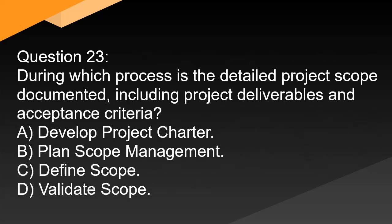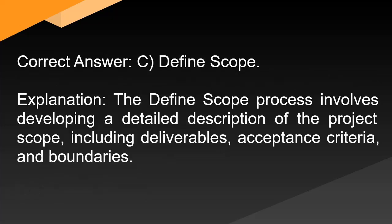Question 23: During which process is the detailed project scope documented, including project deliverables and acceptance criteria? A. Develop project charter. B. Plan scope management. C. Define scope. D. Validate scope. Correct answer: C. Define scope. Explanation: The define scope process involves developing a detailed description of the project scope, including deliverables, acceptance criteria, and boundaries.